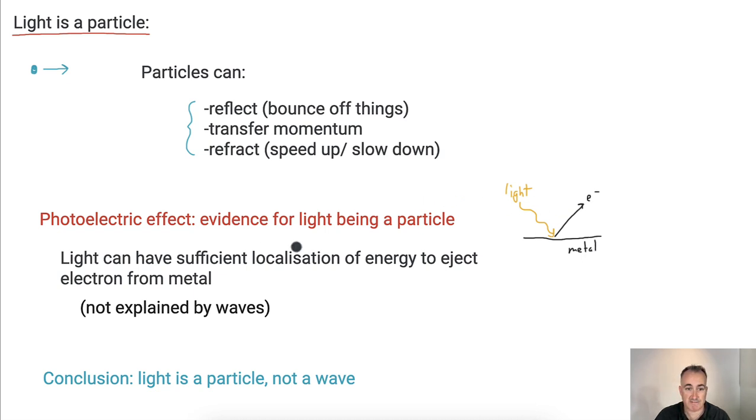Well, it turns out light can have sufficient localization of energy. In other words, light can be like a ball or a particle enough to where it can actually kick off an electron from the metal. And it turns out waves can't really do this. So because of this, you can say we've got this thing called photoelectric effect, which is that light must be a particle.